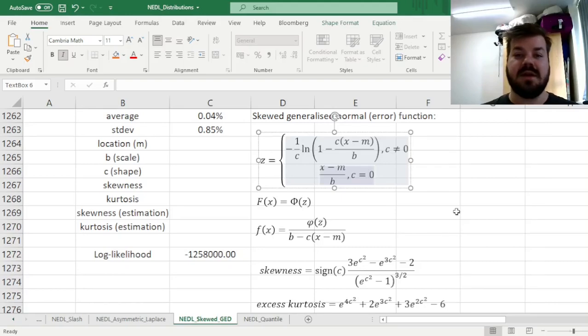If C is equal to 0, it is symmetric, it is not skewed, skewness is equal to 0, and our Z-stat is just a scaled X, as you normally have it in the normal distribution, X minus location parameter M divided over the scale parameter B. However, if C is non-zero, then the parameterization is actually quite interesting. We have got minus 1 over C times the natural logarithm, Ln, of this expression over here.